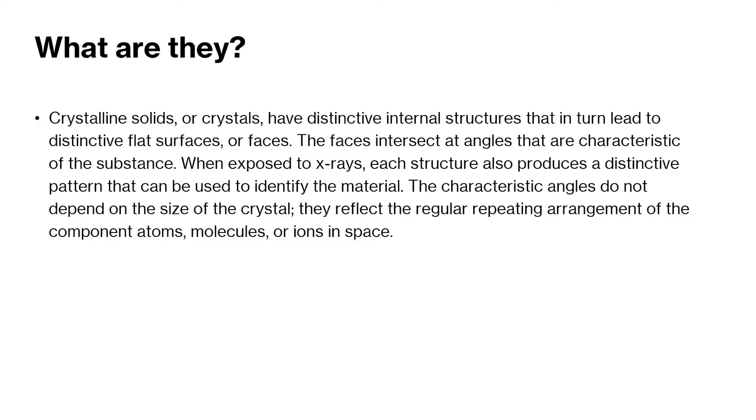So what are they? Crystalline solids, or what we just call crystals, tend to have these distinct internal structures with distinctive flat surfaces or faces. This is hinting to a type of lattice structure that we can see. When we expose these to x-rays, each structure also produces a distinctive pattern that can be used to identify the material. So when you're doing stuff like geology, we can shine light and look at how the light refracts within the crystal structure to identify whether this thing is a ruby or something else, a different type of crystal. The characteristic angles do not depend on the size of the crystal. They reflect the regular repeating arrangement of the component atoms, molecules, or ions in space.